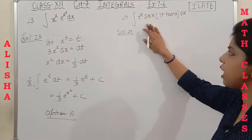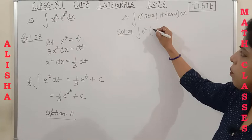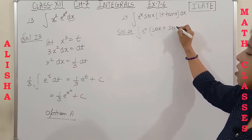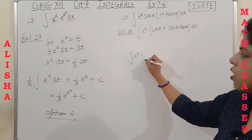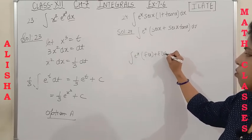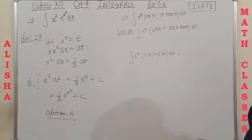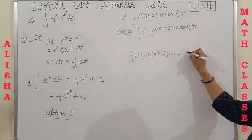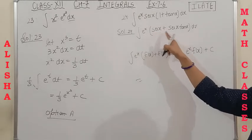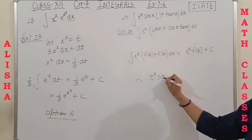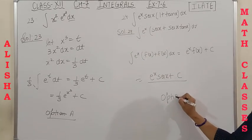Question 24 (MCQ): ∫e^x·sec x·(1+tan x) dx. Expanding: sec x + sec x·tan x. This is in the form e^x[f(x)+f'(x)] with f(x) = sec x, since the derivative of sec x is sec x·tan x. By the direct formula, the answer is e^x·sec x + C, which is option B.